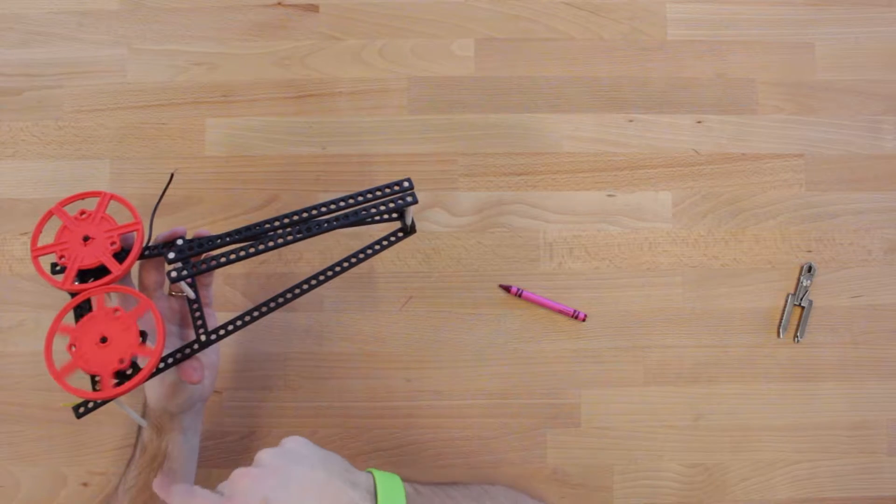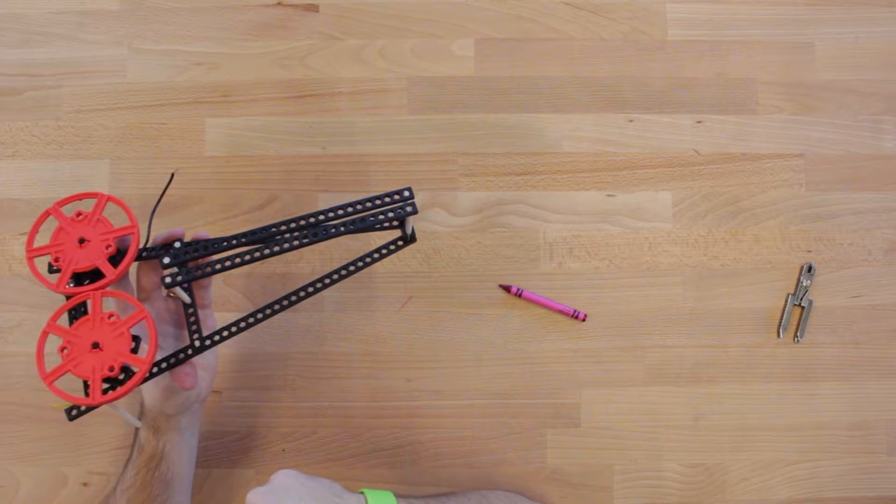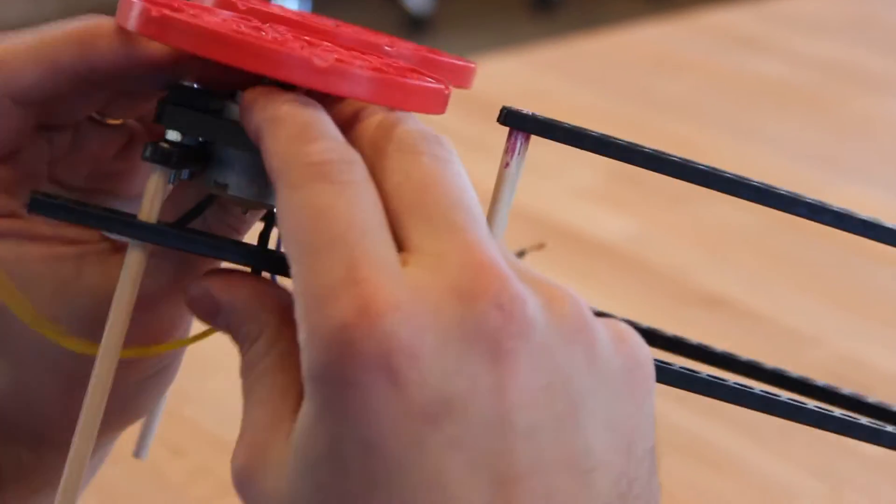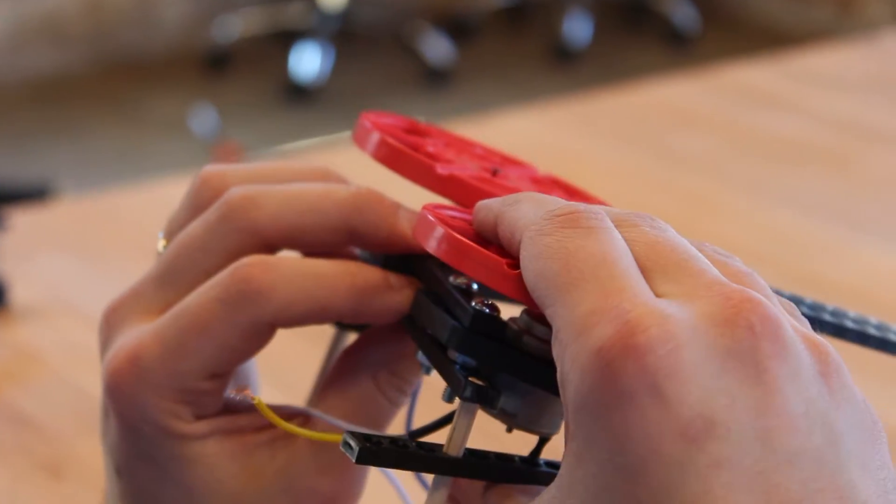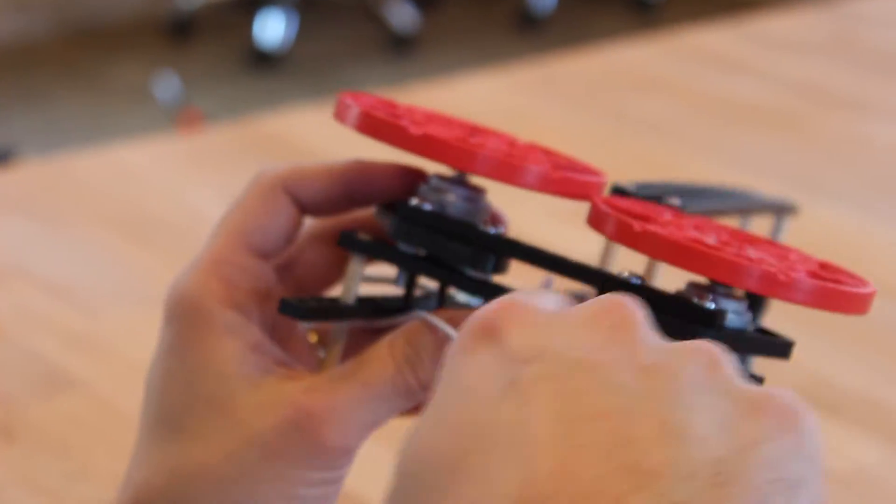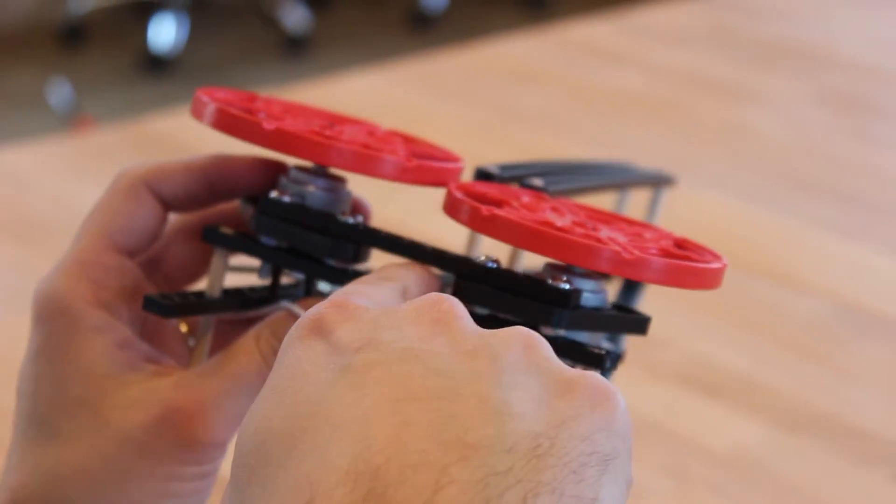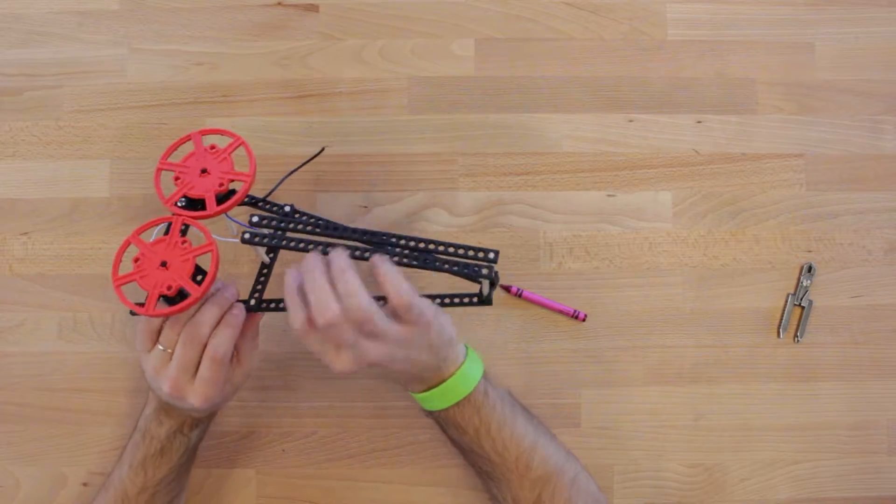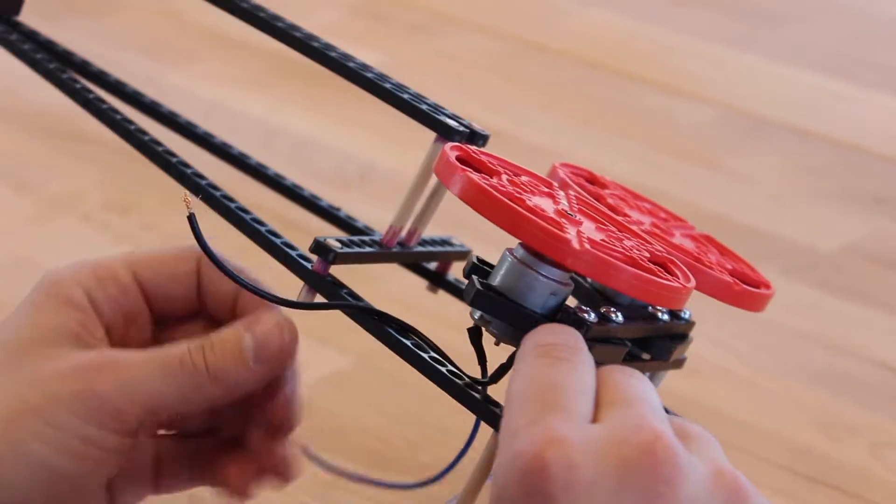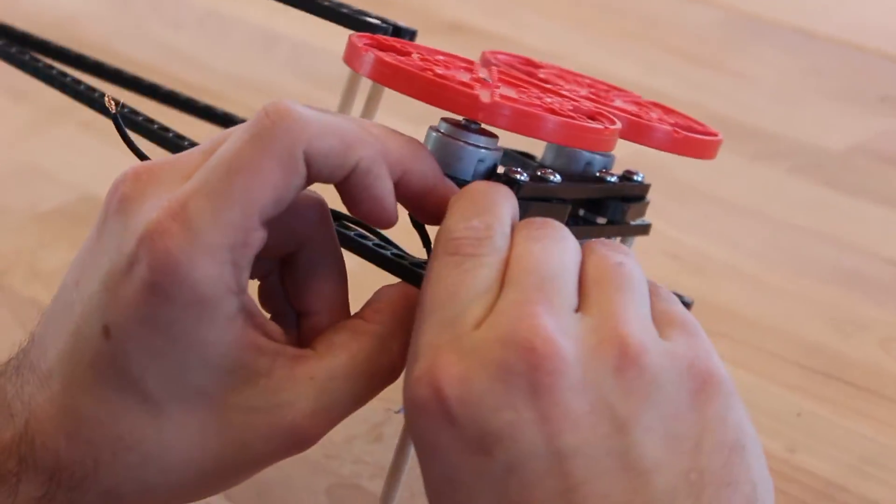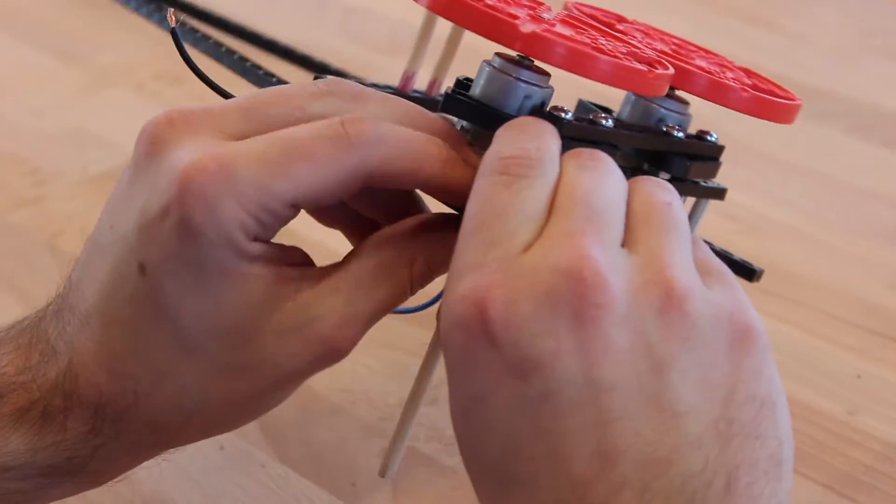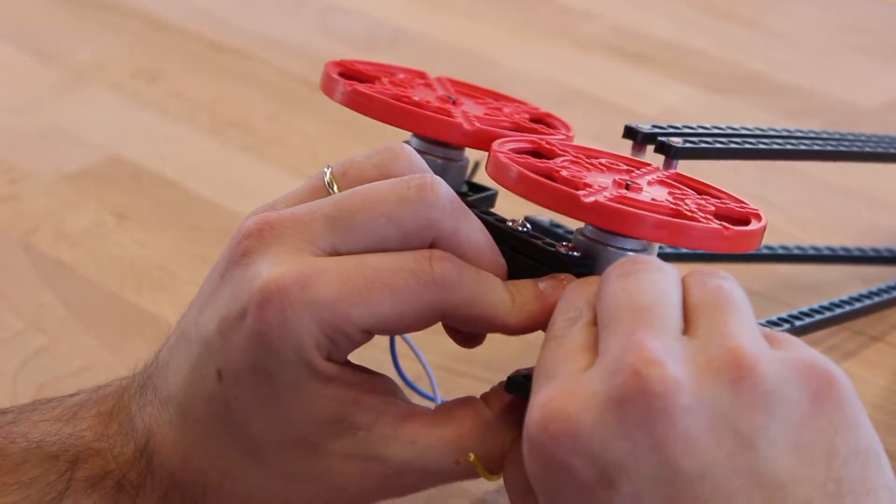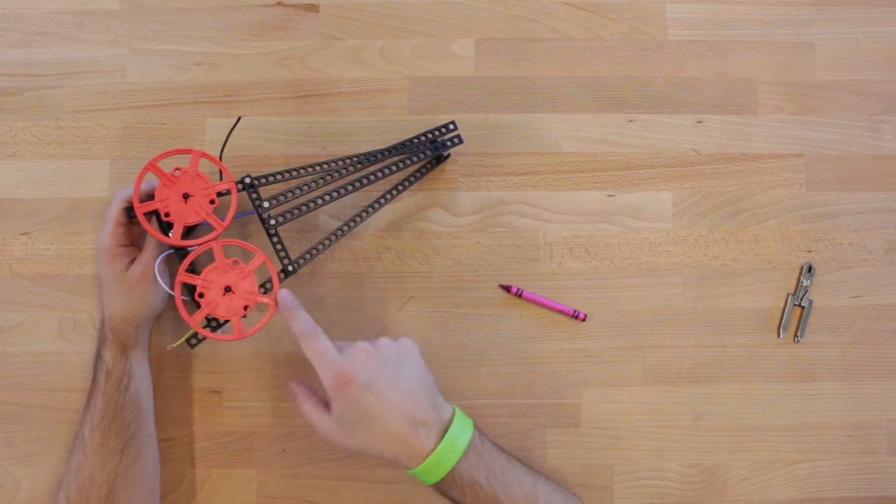The guides need to be positioned slightly higher than the wheels so that the paper airplane can ride over them. Adjust the motors and the guides so that the guides are positioned just higher than the wheels. To make this happen, you may have to push your motors down or rearrange your dowels a little bit. There, that looks pretty good.